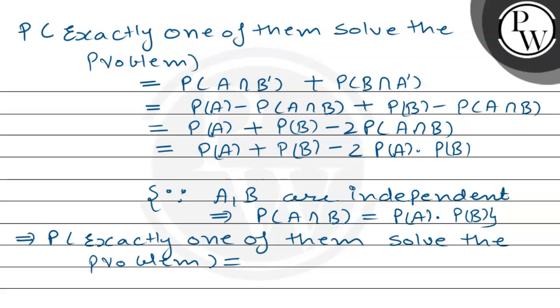Substituting the values: probability of A is 1/2, plus probability of B is 1/3, minus 2 multiplied by probability of A (1/2) multiplied by probability of B (1/3). This implies the probability that exactly one of them solves the problem is 1/2 + 1/3 - 2×(1/6).